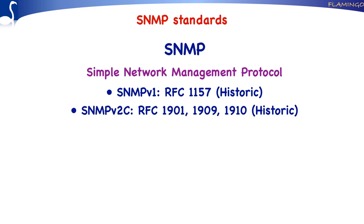Unfortunately, the IETF could not agree on an improved security mechanism. Therefore, SNMP version 2 has still the same community-based security mechanism as SNMP version 1. That is the reason why SNMP version 2 is called SNMP version 2-C. The C stands for Community. Note that during standardization, many other variants were also under discussion.